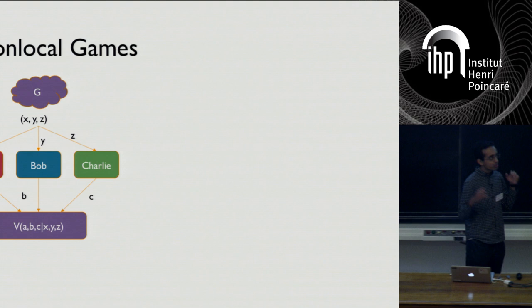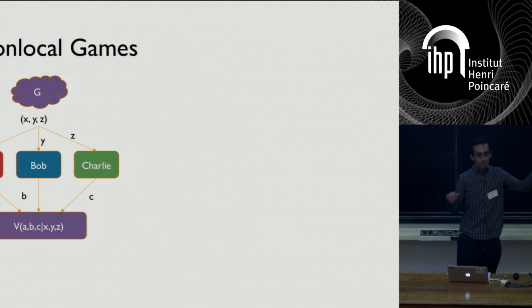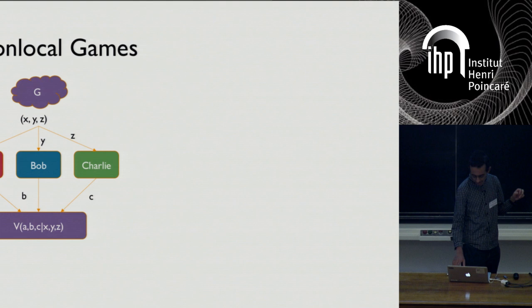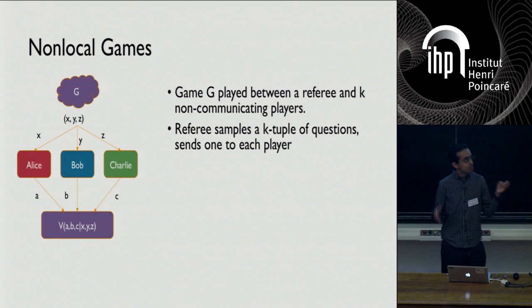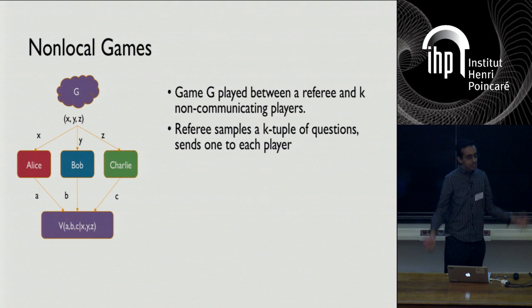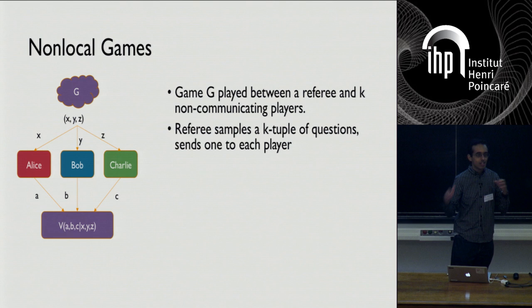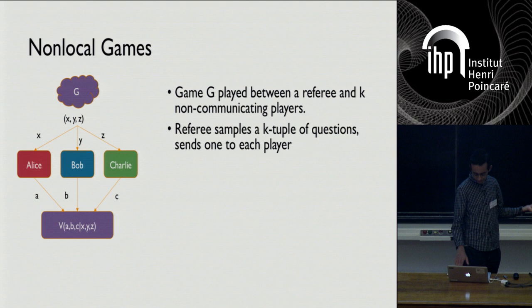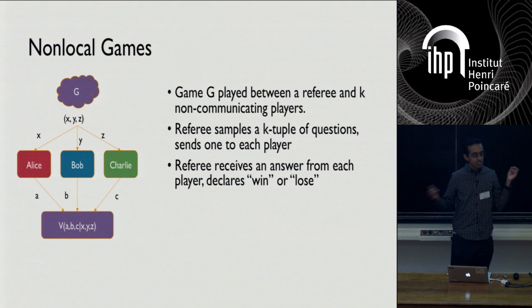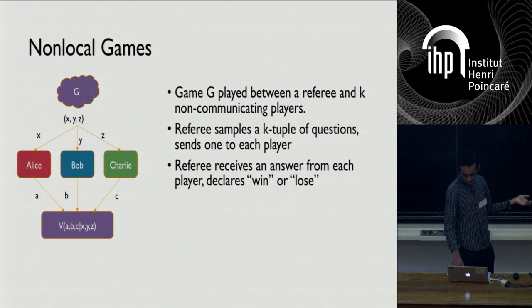A non-local game is a game played between some number of players — here we've labeled them Alice, Bob, and Charlie — and a referee. The players are trying to collaborate and win against the referee. The referee samples a k-tuple of questions and sends one question to each player. Then the players come up with answers; they're not allowed to communicate, but they can agree on a strategy in advance. They send their answers to the referee, who evaluates some predicate V depending on the answers and questions, which outputs either win or lose.